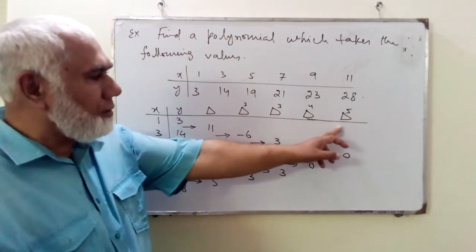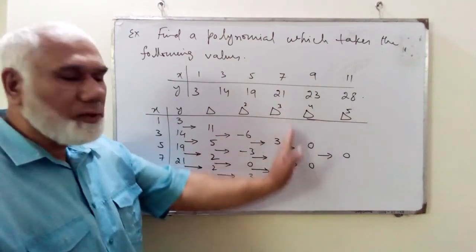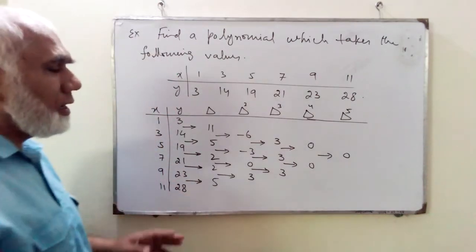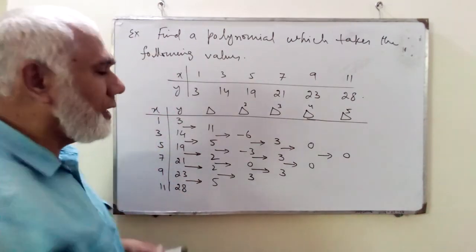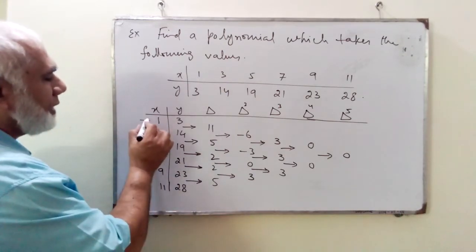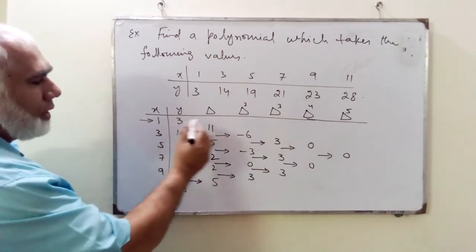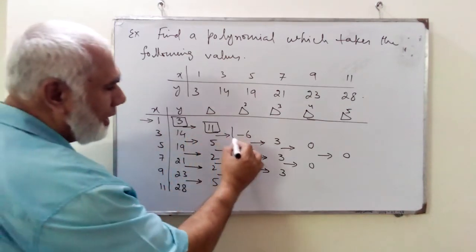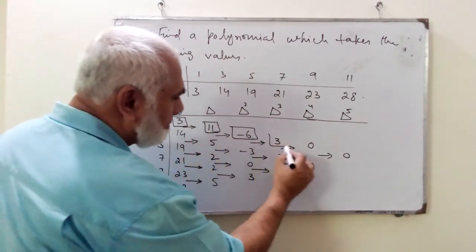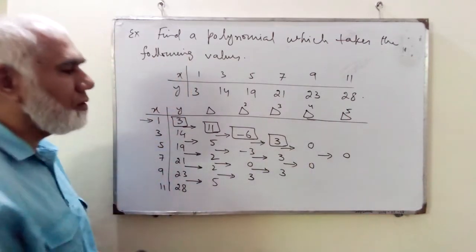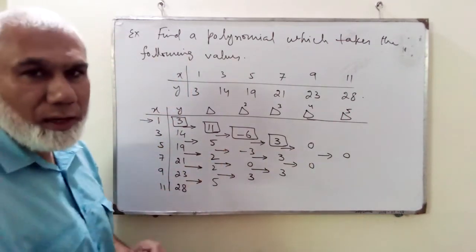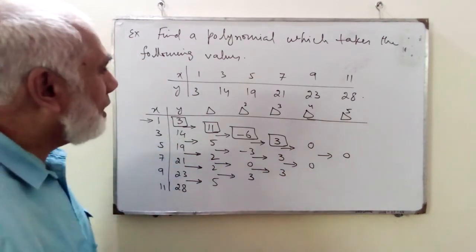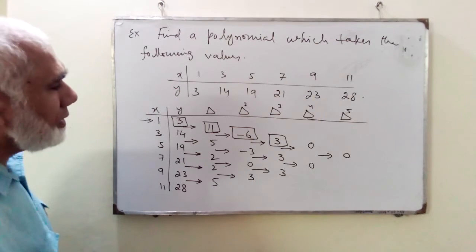Since the fourth and fifth differences are zero, we only need to go up to the third order difference. For the forward difference interpolation, we take the starting point x₀ at one. The corresponding values we are going to use are boxed — these are the values for our interpolation formula. The remaining terms are zero so there is no need to include them.